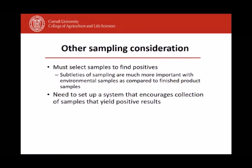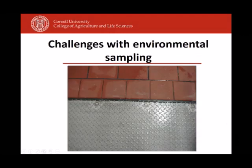A continuous challenge for industry is that people do environmental monitoring but don't sample correctly to find Listeria — sometimes because they don't want to find it due to potential business impacts, and sometimes simply because they are not well trained. A typical situation: you have a metal board, tile, and a crack in between. It's essential to sample that crack, not just the clean flat surface after sanitation. You will rarely find anything on a clean flat surface after sanitation, but if you put a sponge deep inside the crack, you are much more likely to find Listeria problems.